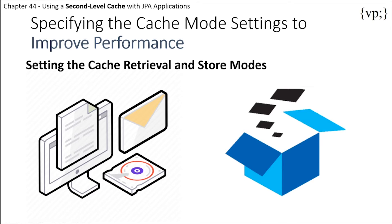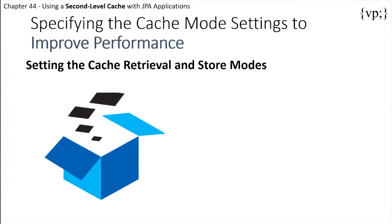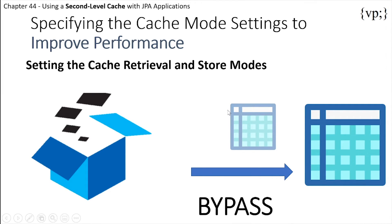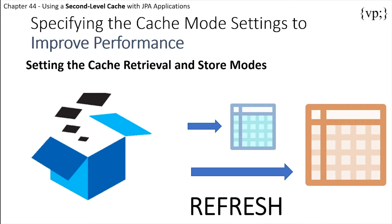For cache store modes, the default USE mode will keep the second level cache as it is even when the database is accessed, meaning your cache will have the same data — and the same is true for BYPASS. If you set REFRESH, when the database is read, the cache updates to match the updated database, which changes your second level cache and gets rid of the stale read problem.